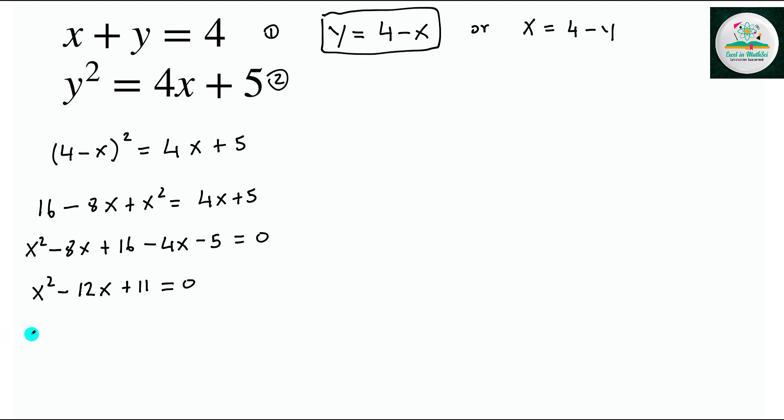Now we factorize this into two linear expressions, and that would be x minus 1, x minus 11, and that is equal to 0.